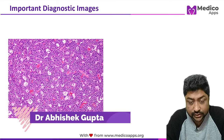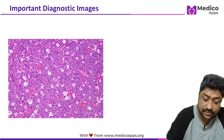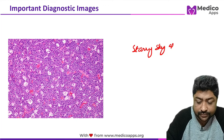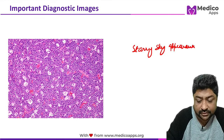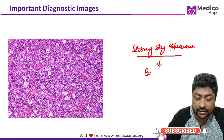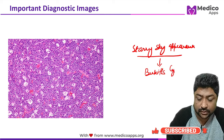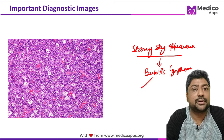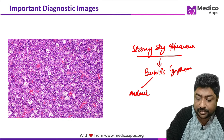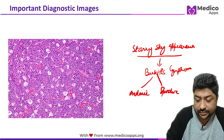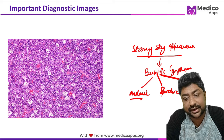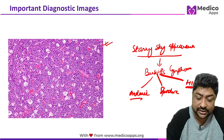The next image shows a completely filled, characteristic appearance called the starry sky appearance. This is primarily diagnostic of Burkitt's lymphoma. Burkitt's lymphomas are very aggressive tumors, divided into endemic, sporadic, and HIV-related subtypes. The endemic form is associated with jaw swelling.